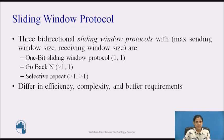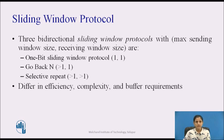Three bi-directional sliding window protocols differ in their maximum sending window size and receiving window size. The 1-bit sliding window protocol has sending window size 1 and receiving window size 1. Go-back-N protocol has sending window size greater than 1 and receiving window size 1. Selective repeat protocol has sending window size greater than 1 and receiving window size greater than 1. These protocols differ in terms of efficiency, complexity, and buffer requirements.